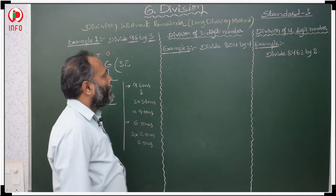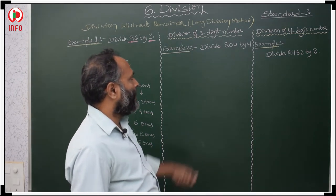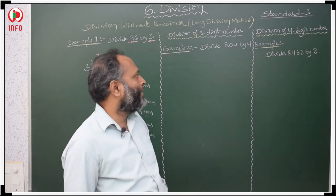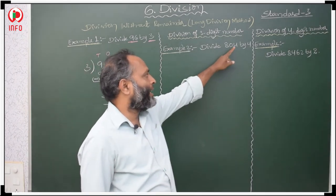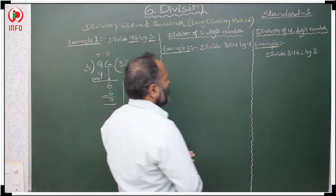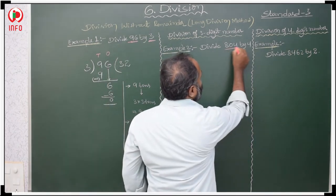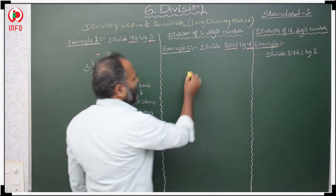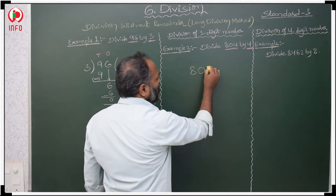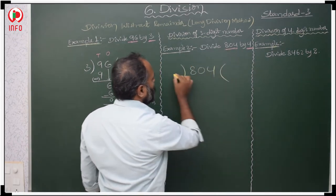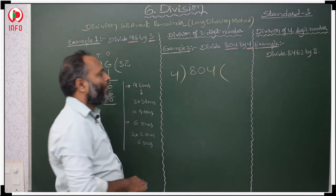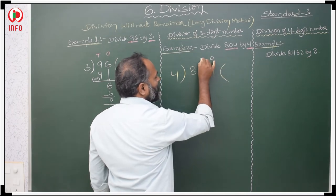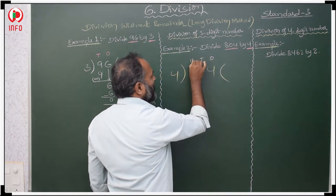Now we divide the 3-digit number 804 by 4. This is in 1's place, this is in 10's place, and this is in 100's place. First, we take the extreme left digit.